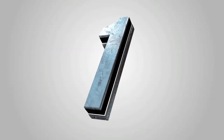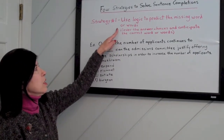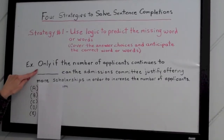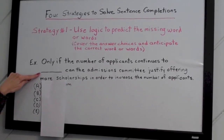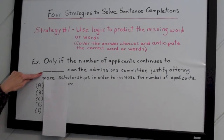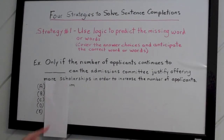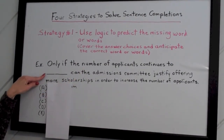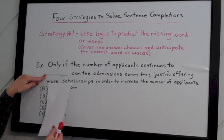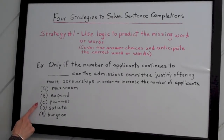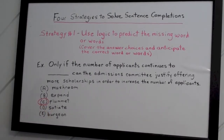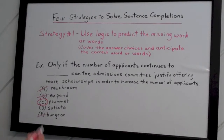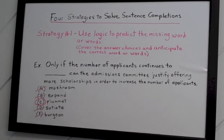Strategy number one: use logic to predict the missing word or words. You can cover the answer choices and anticipate what the missing words might be. For example: 'Only if the number of applicants continues to blank can the admissions committee justify offering more scholarships in order to increase the number of applicants.' Using logic, if they need to justify offering more scholarships to increase applications, the number of applicants must be decreasing. Looking at the choices — mushroom, expand, plummet, satiate, virgin — plummet is the only choice meaning going down. Mushroom, expand, and virgin mean to grow; satiate means to satisfy. So plummet is the answer.